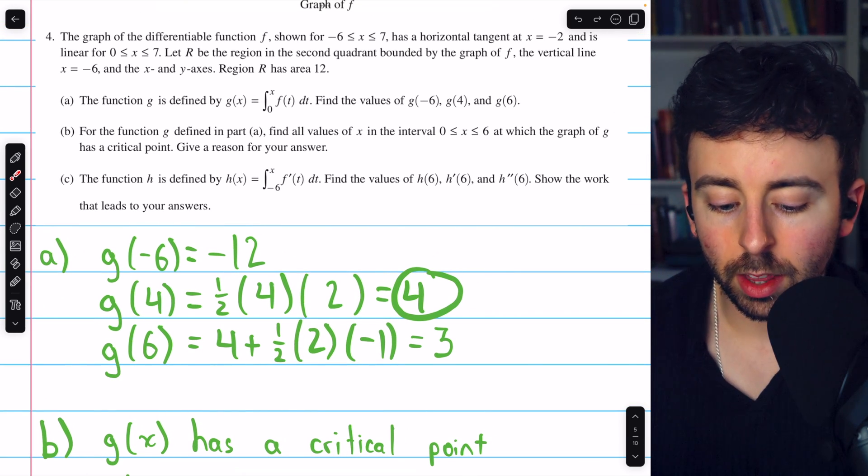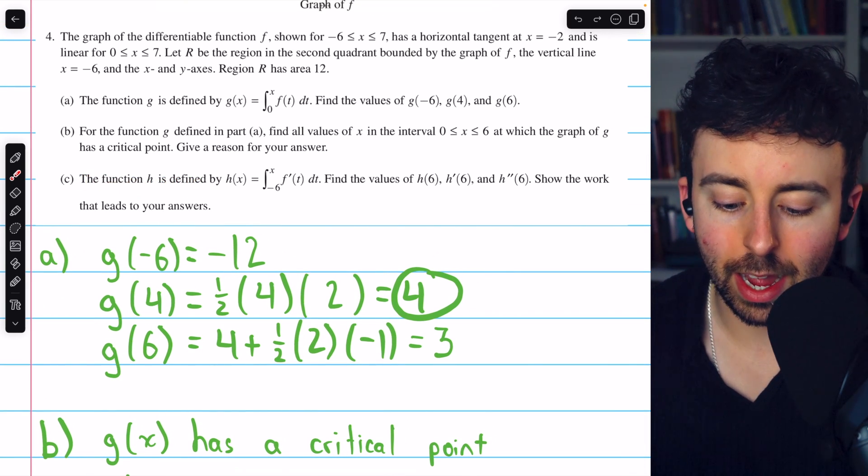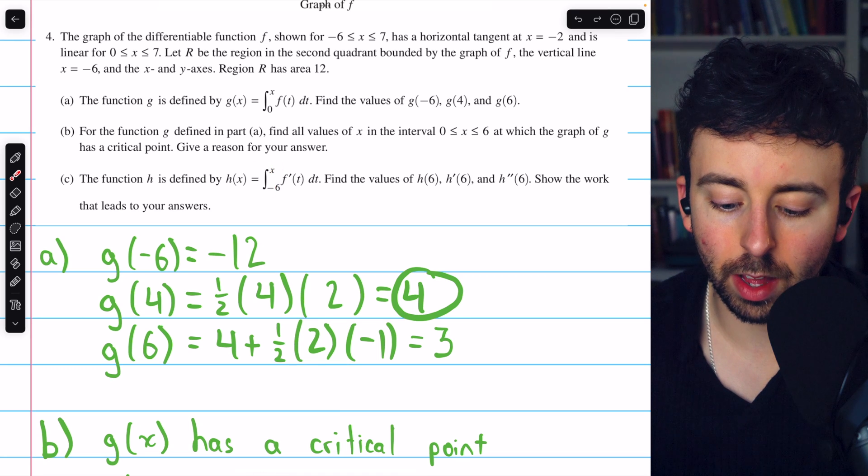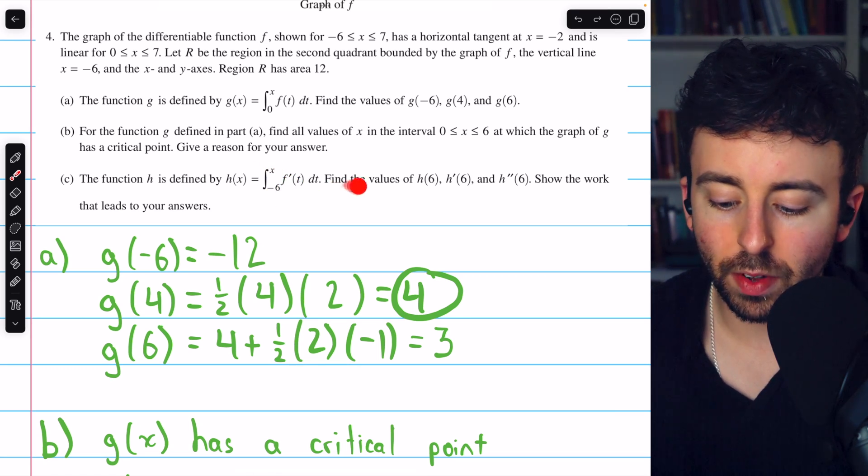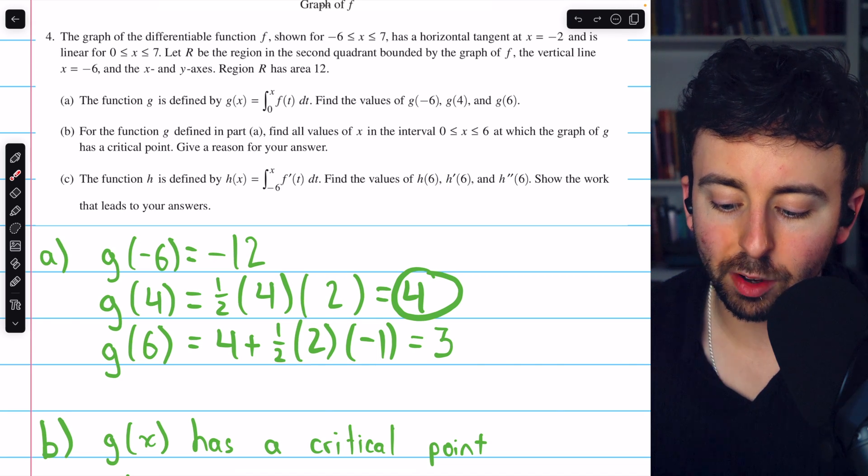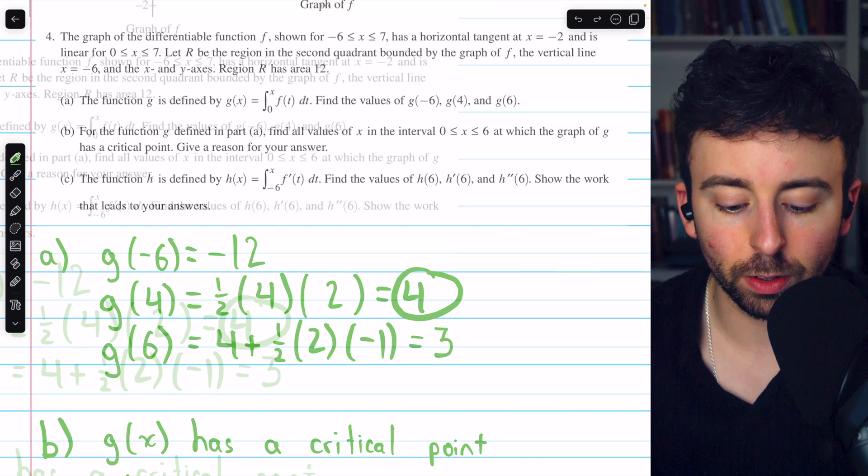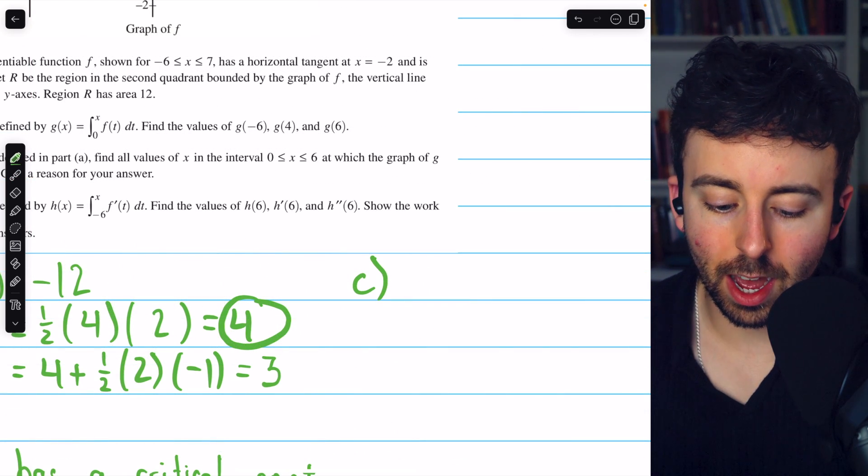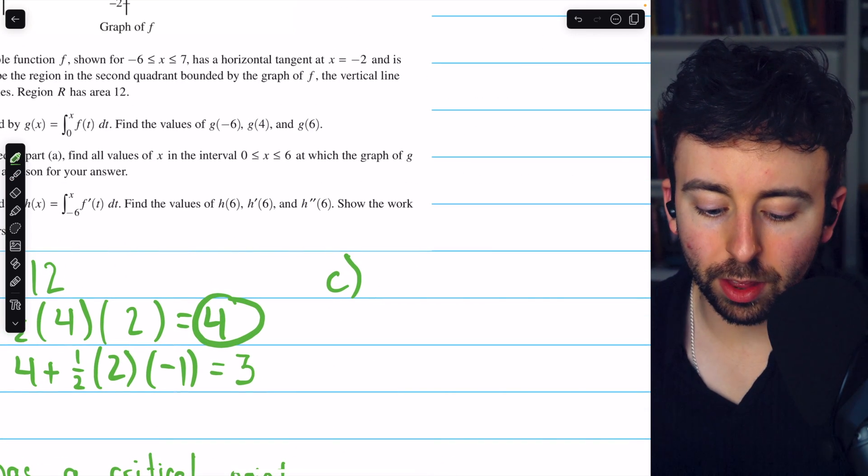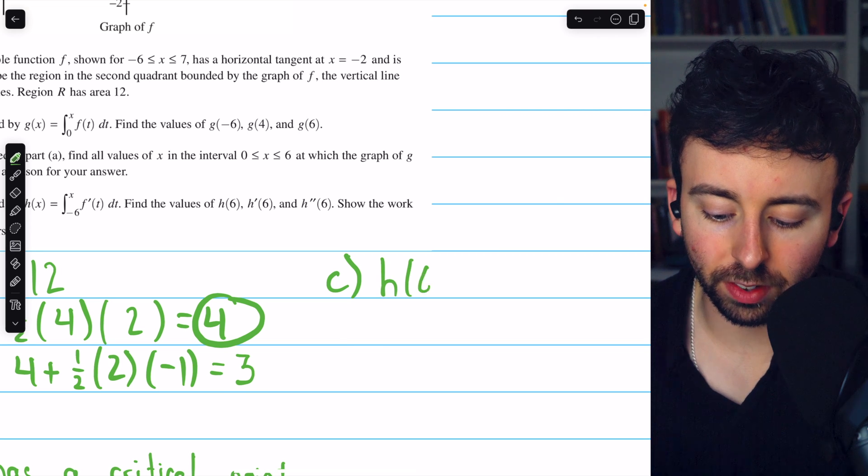Let's finish with c. The function h is defined by h of x equals the integral of f prime of t dt from negative 6 to x. Find the values of h of 6, h prime of 6, and h double prime of 6, and show the work that leads to our answers. So I'll jot down part c up here, beginning with the calculation of h of 6.